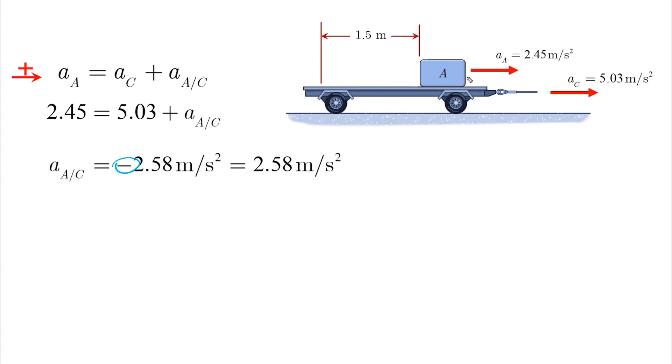because it means that A is moving with a negative acceleration relative to the cart, which means that it is moving relative to the cart in the left direction, and this is how it will reach the other side.